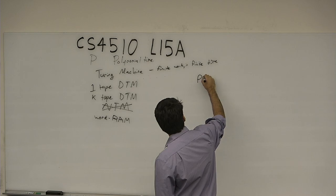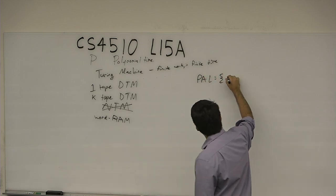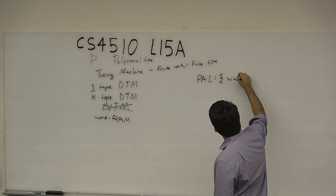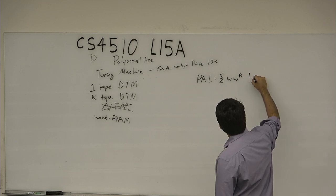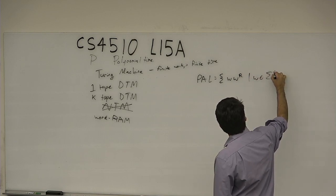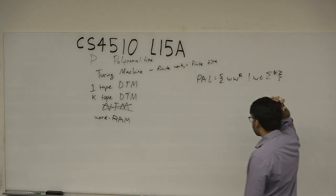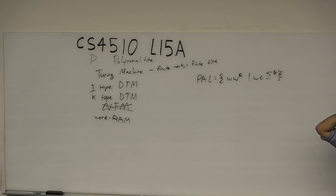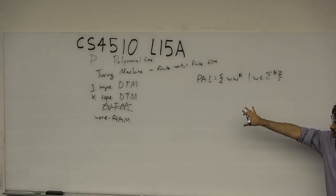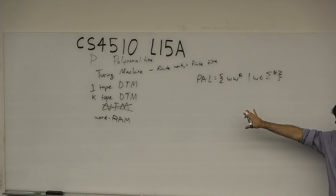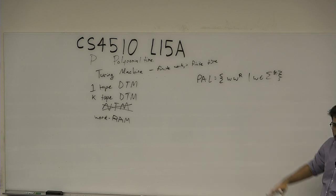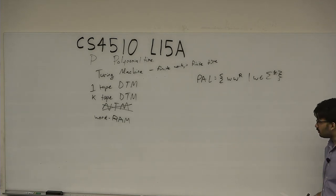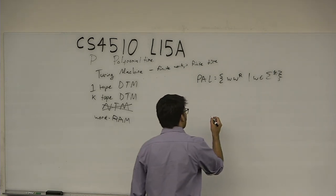Consider PAL, the language of palindromes — strings W in sigma-star such that W equals its reverse. I want to consider algorithms specific to these machines that can decide palindromes. For a word RAM, if we were to give pseudocode, what would we do? Here's my solution — and the cool thing about being a theorist is you can be really terrible at programming.